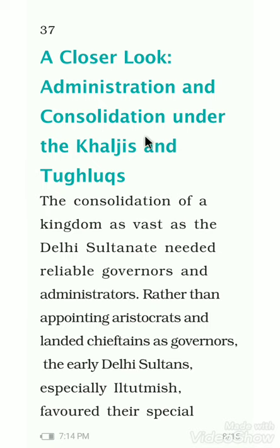Now let us take a closer look at administration and consolidation under the Khalji and Tughlaq dynasties. Consolidation means how they maintained control. The Delhi Sultanate's vast kingdom needed reliable governors. To control this large area, rather than appointing aristocrats — the rich Amirs and Maliks of their court — the early Delhi Sultans, especially Iltutmish, appointed governors from among their own purchased slaves.